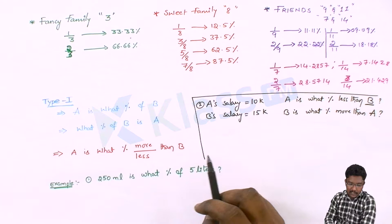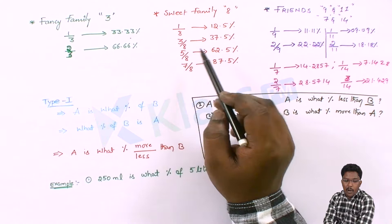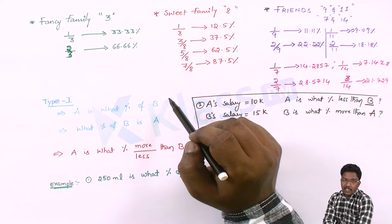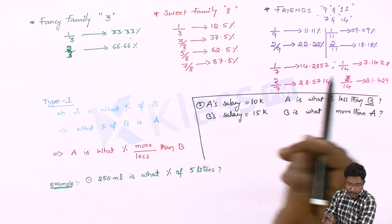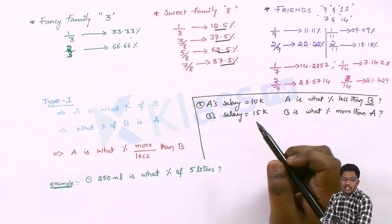Next is the 'sweet family' — eight belongs to the sweet family. Observe the values: 1/8 means 12.5%, 3/8 means 37.5%, 5/8 means 62.5%, 7/8 means 87.5%. These are the common values asked in examinations. Why is it called the sweet family? Every value ends with 2.5 or 7.5 — the repeating value is 2.5 or 7.5.